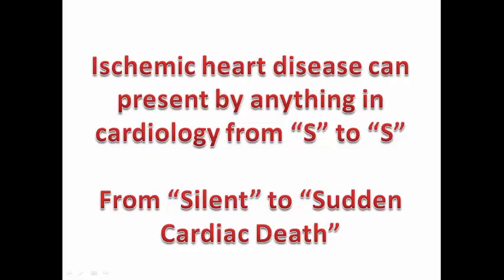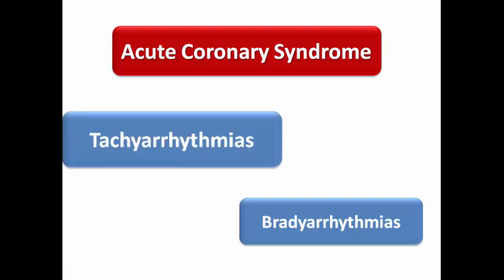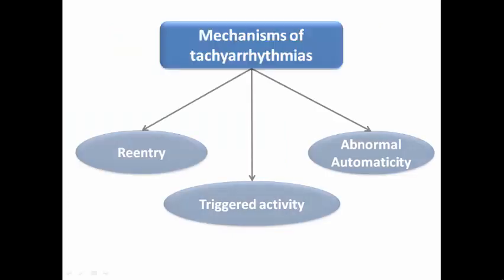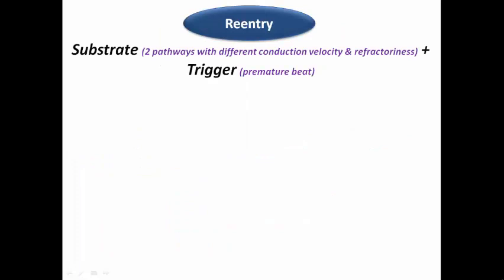We are combining these two topics together today. We are focusing on tachyarrhythmias; bradyarrhythmias with acute coronary syndrome will be discussed in another lecture. The three mechanisms of tachyarrhythmias are: re-entry, abnormal automaticity, and triggered activity — including early and delayed afterdepolarizations. Re-entry requires a substrate consisting of two pathways with different conduction velocity and refractoriness, plus a trigger, which is mostly a premature beat.